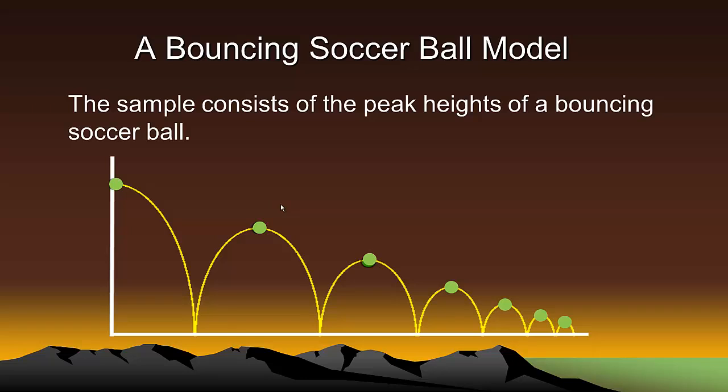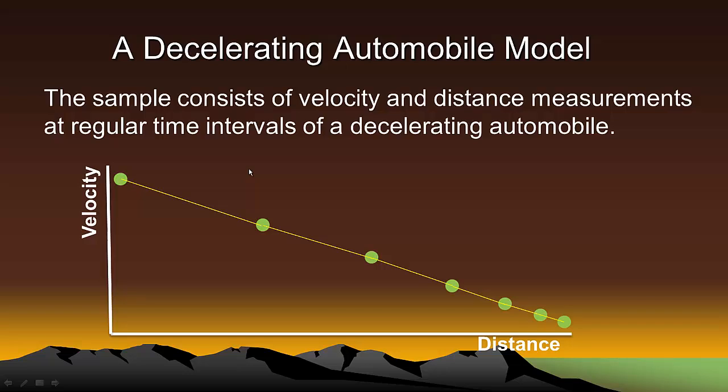Well, alternatively, let's say you're told that the green sample data points are distance and velocity measurements of a decelerating or slowing automobile and these measurements were taken at regular time intervals. Given this model, you could complete the profile this way. Velocity is plotted on the y-axis while distance traveled is plotted on the x-axis. Note that the velocity and distance traveled between data points decreases as the automobile is slowing down because the data was taken at regular time intervals.